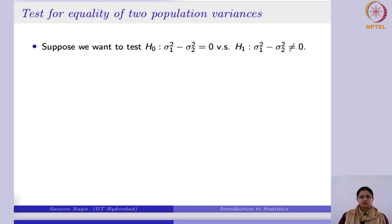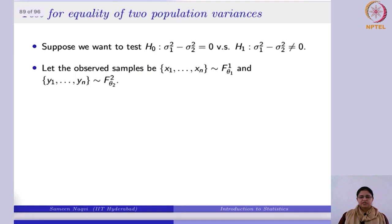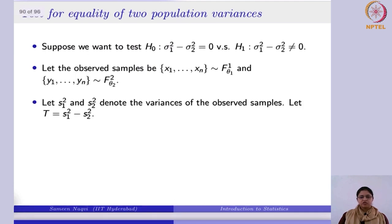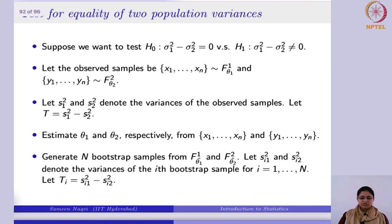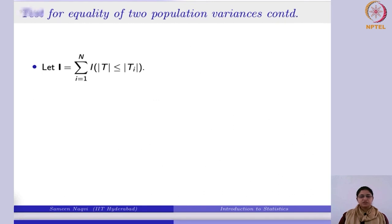Next, likewise you can do this for two population variances. The same steps apply. You sample from two different populations, calculate their corresponding sample variances, take the difference to get t. Then you estimate the parameters and resample from the new distributions — distributions with estimated theta 1 hat and theta 2 hat. The indicator function i will be there.